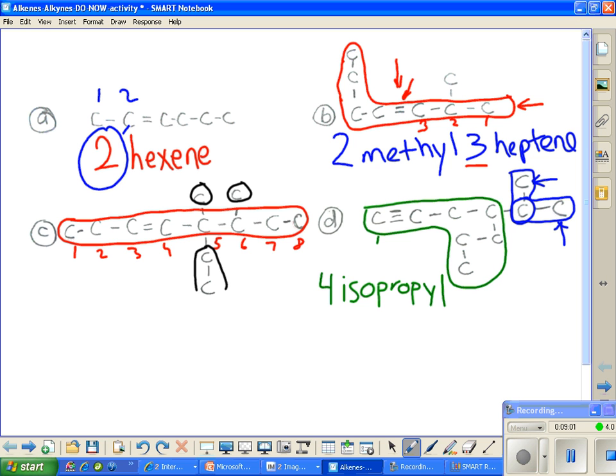And how long is the longest chain? Seven. Good. And what number is the triple bond on? One. So it's a one, which tells you where the triple bond is. And the Y in here, heptyne, tells you that this guy is a triple bond. The one tells us that the first carbon to touch him is number one. And that's how you do your alkenes and alkynes.